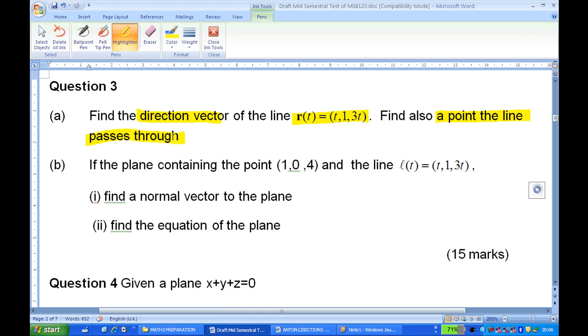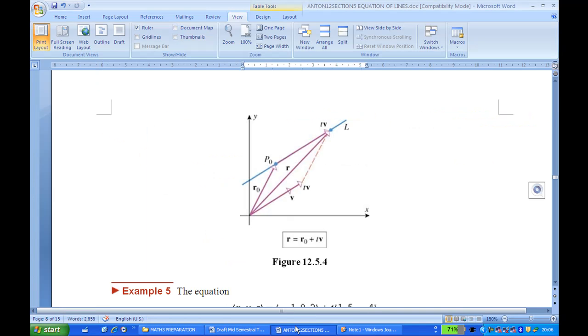Now in this case there are actually many points the line passes through, so what we need is just pick one convenient point. And where is this question coming from? This question is actually coming from Anton chapter 12 section 5, parametric equation of the line.